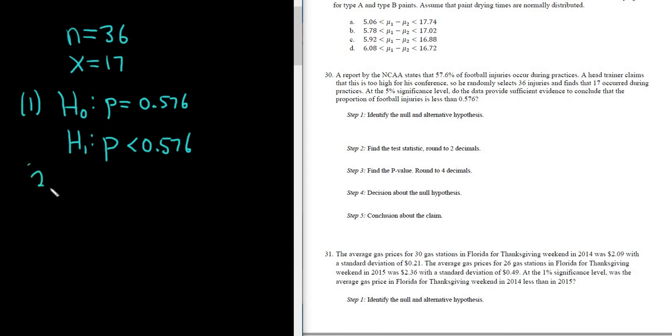Two, we want the test statistic, round to two decimals. Three, we want the P value, round to four decimals. Okay, so this stuff we can get from StatCrunch. So let's do that.